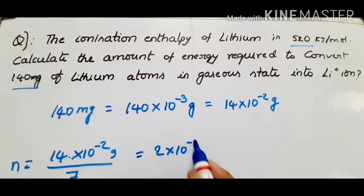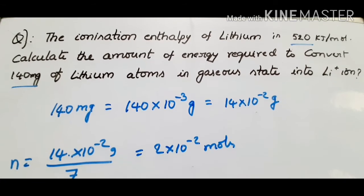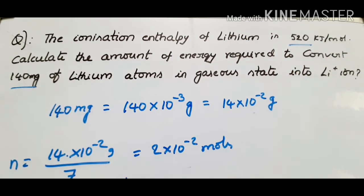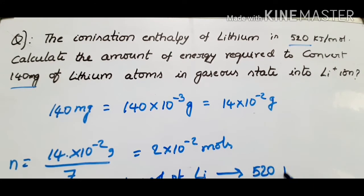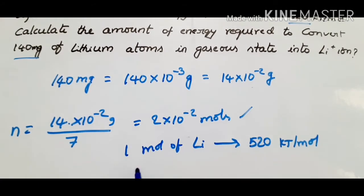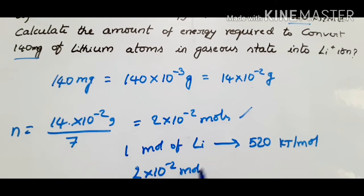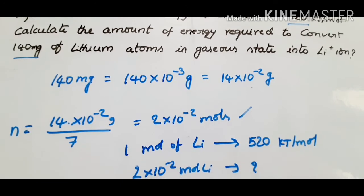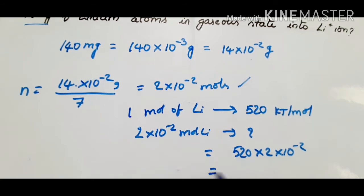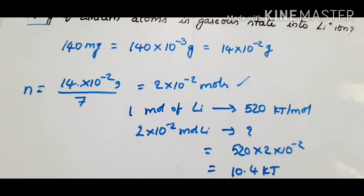You get 2 × 10⁻² moles. From the given data, for 1 mole of lithium the ionization enthalpy is 520 kJ/mol. By cross multiplication: energy = 520 × 2 × 10⁻² ÷ 1, and you finally get the answer 10.4 kilojoules. Students, it takes hardly 2 minutes if you know the process.